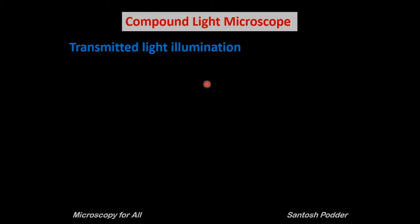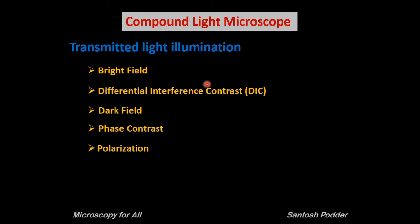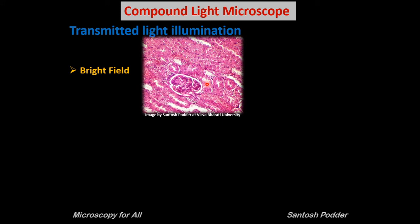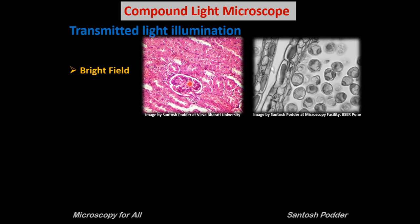There are different types of transmitted light illumination microscopes: bright field, DIC, dark field, phase contrast, and polarization microscopes. The bright field microscope is the common illumination technique generally used in compound microscopes in schools, colleges, and laboratories. In this microscope you can easily see fixed stained samples — for example, a cross-section of mouse kidney where you can clearly see the glomerulus, and a grayscale image of the cross-section of a male flower of a hazelnut tree. However, contrast is very poor for unstained live samples.